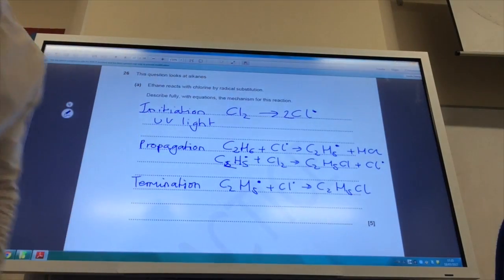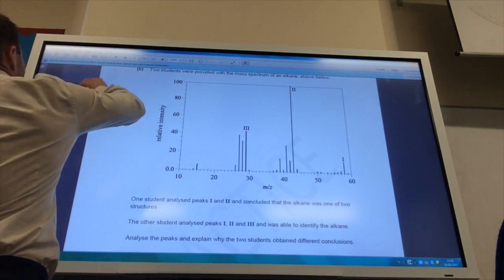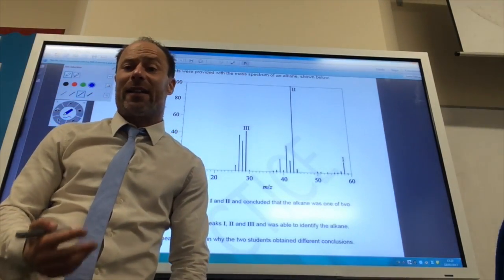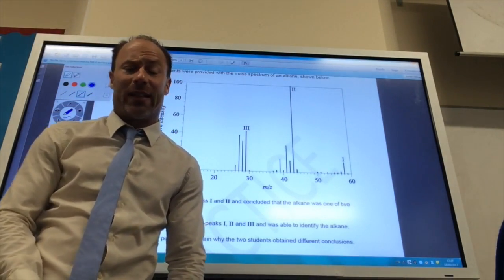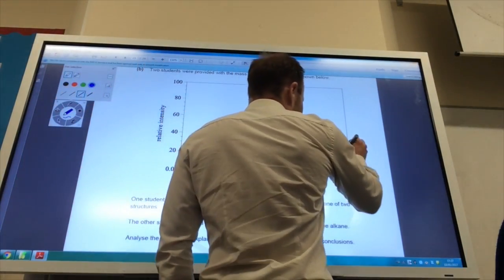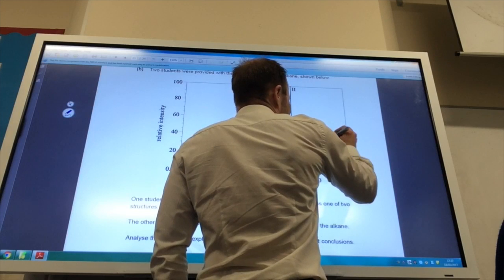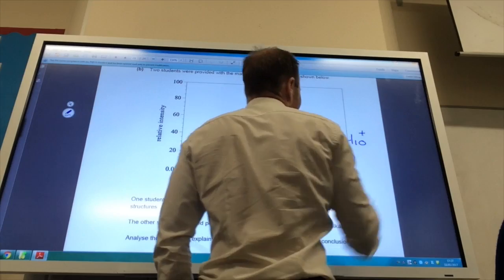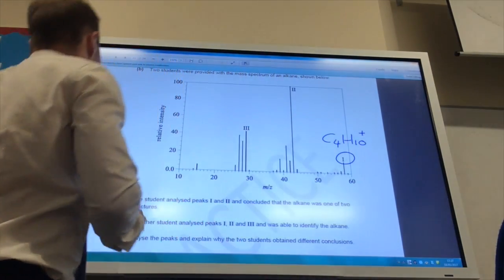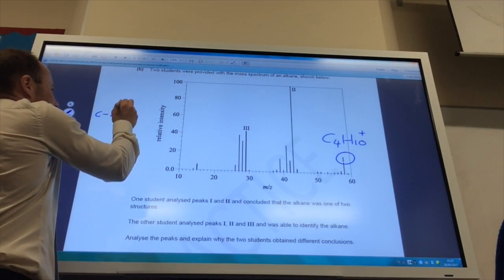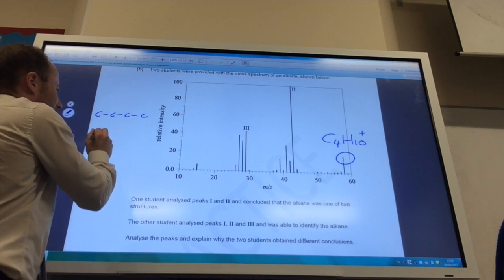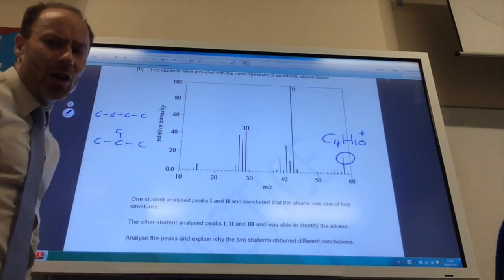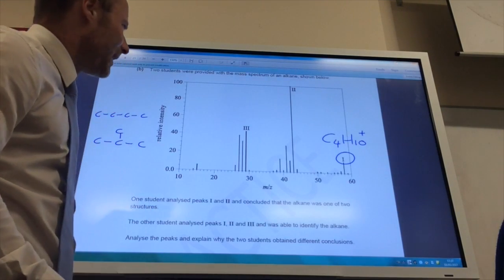So the final question wants me to analyze a mass spec of an alkane. Alkane only contains carbon and hydrogen, and it's saturated. So, let's look at my molecular ion peak. That comes in at 58. If it's 58, it's C4H10+ as your molecular ion. So, you know it's either going to be four carbons in a row, like so, or three in a row, so it's either butane or methylpropane. Which one is it?